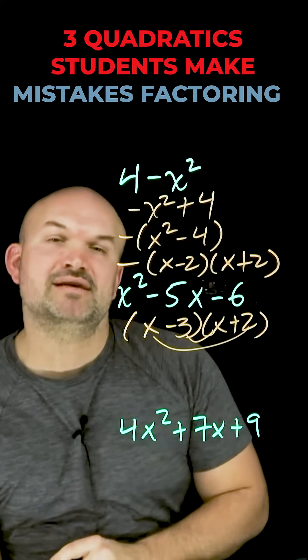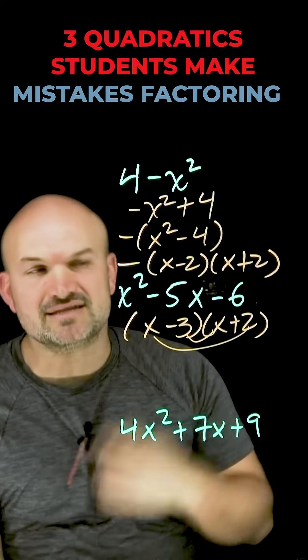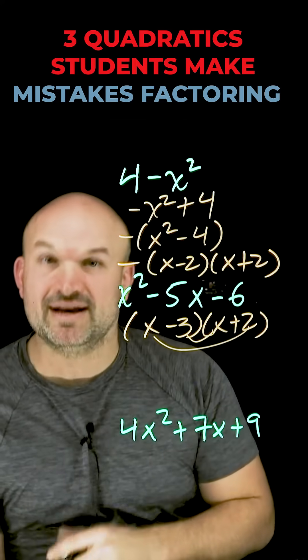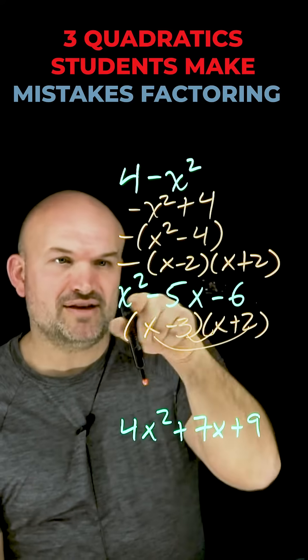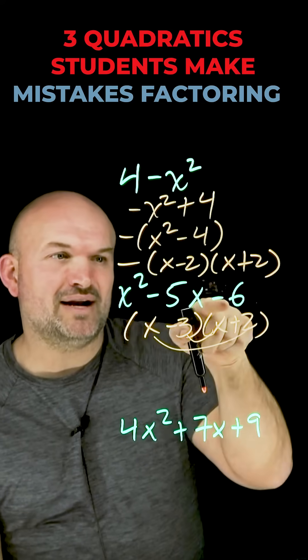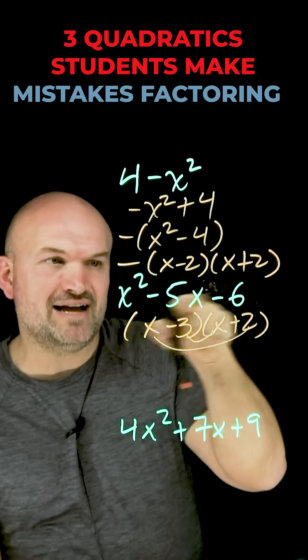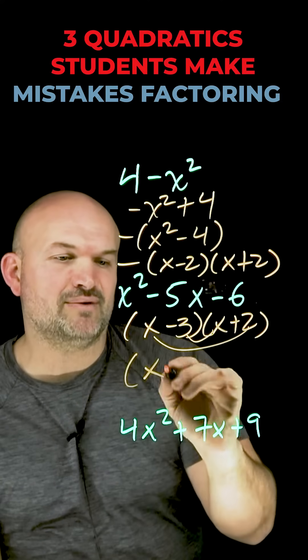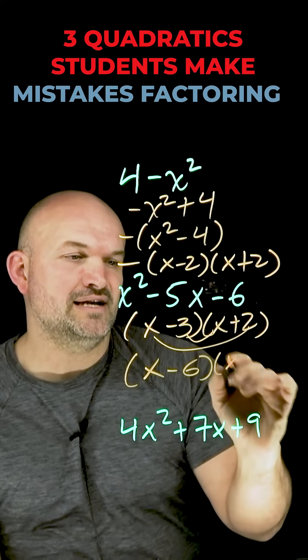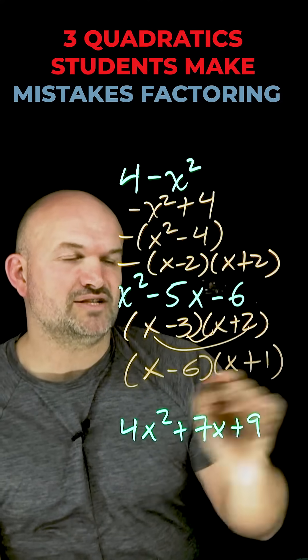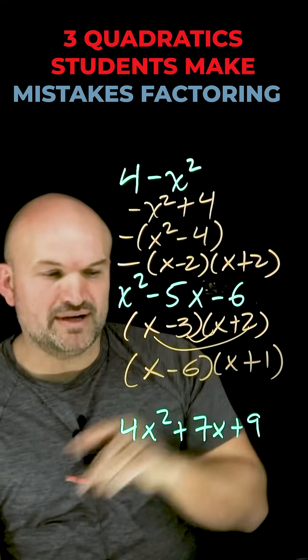The difference between 3 and 2 is 1, so that doesn't work. The other factor pair that multiplies to give 6 is 6 and 1, and those have a difference of 5. So if I want a difference of 5 with a negative 6, I can rewrite this as (x minus 6)(x plus 1).